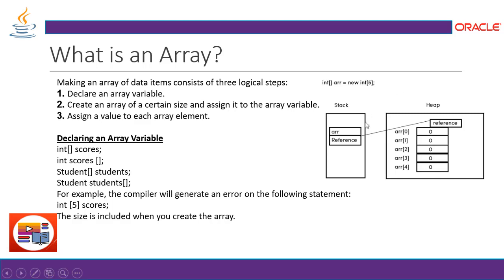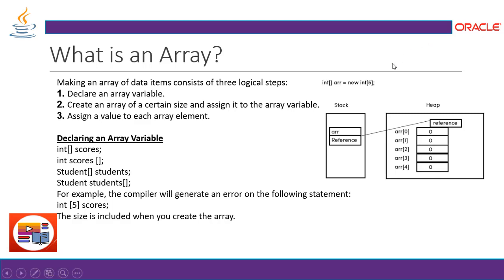Making an array — declaration or initialization — consists of three logical steps. Number one, we declare an array variable. Number two, we create an array of a certain size and assign it to the array variable — 'ARR' is the array variable here. Number three, we assign a value to each array element. So the next step is to give values to these array elements.